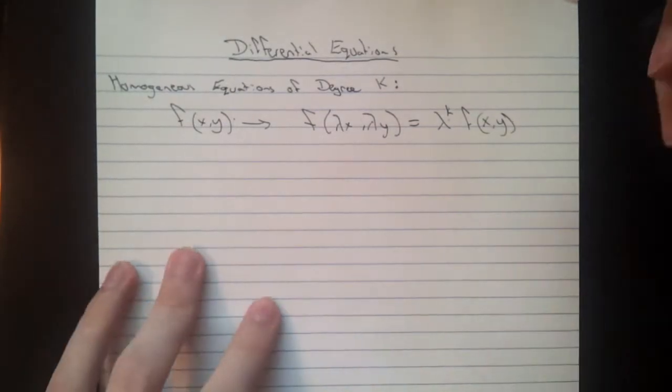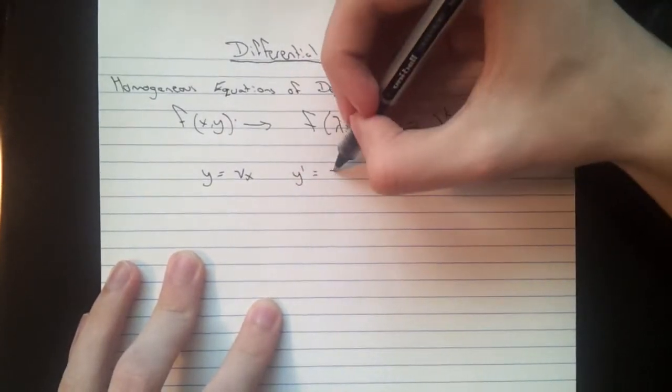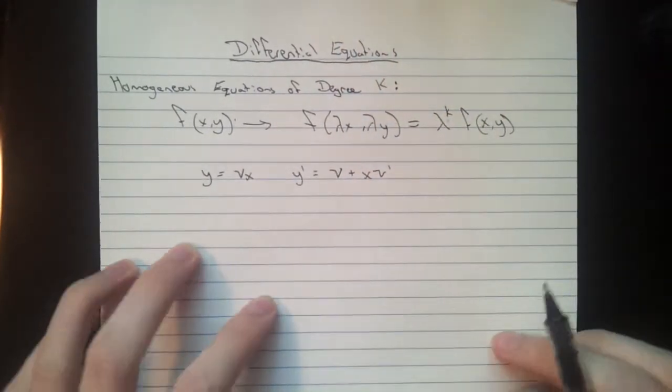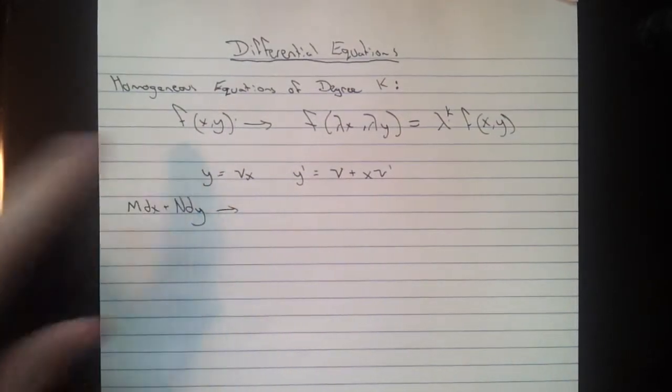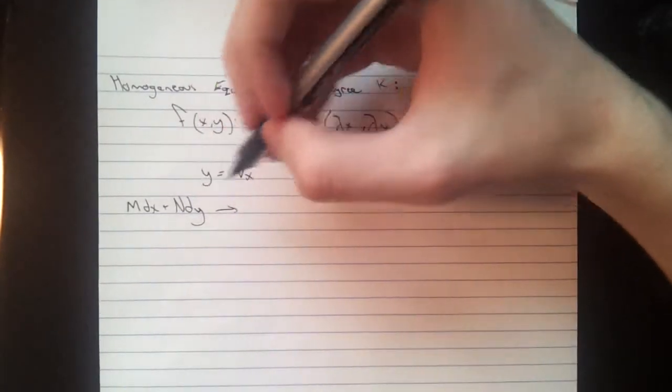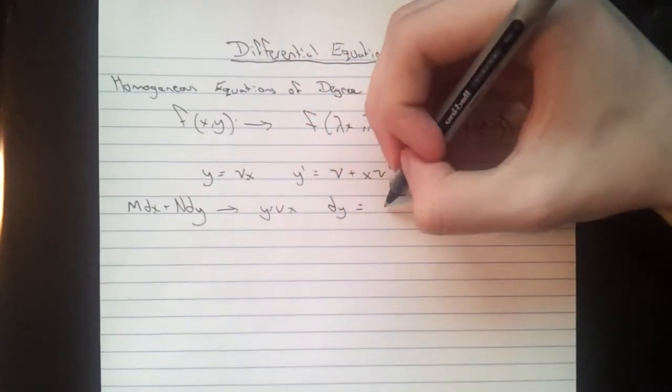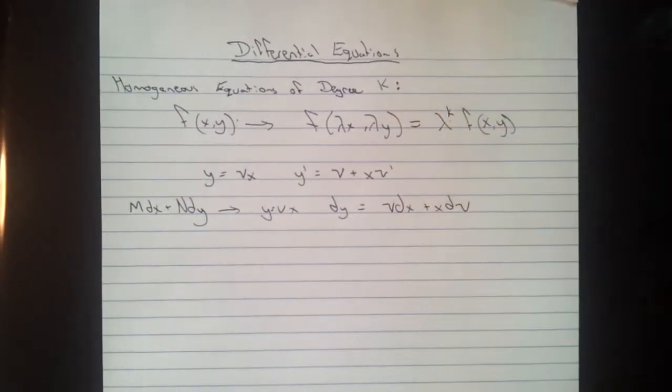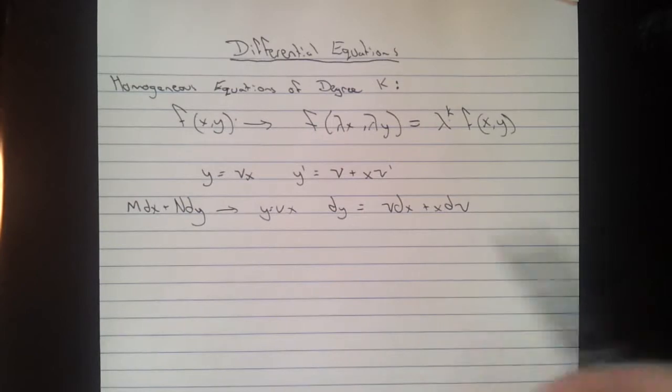And how you would solve this is you want to take y equals vx, and y prime equals derivative of that, of course, so v plus xv prime. Again, if you have your equation in the form mdx plus ndy, you'll remember that from our exact equations video. Same form, if you get it, say it's not exact, you'll check for homogeneous. And if it is, then your dy, y is still vx, yes it is. So y is vx, dy is going to be v dx plus x dv. And what you're going to do is substitute those in and simplify, and the v's will disappear, and you'll be left with your final solution.